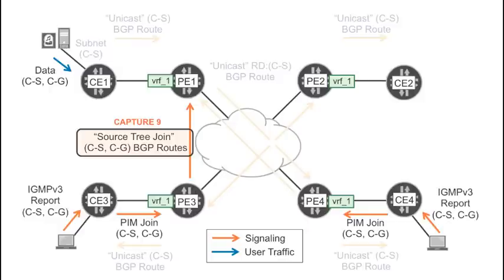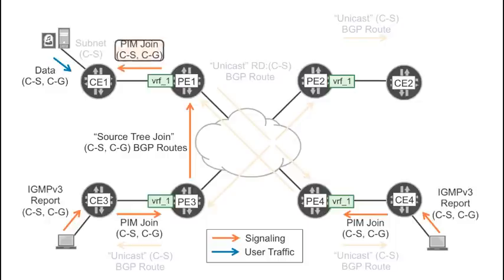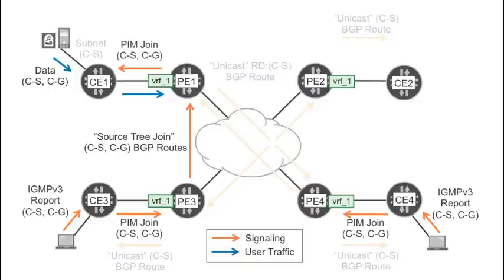This may seem to be an issue, but it's absolutely fine. One source tree join is enough for PE1 to know that there are downstream receivers for that particular flow. PE1 then propagates the PIM join state up to CE1, and the multicast traffic arrives at PE1.